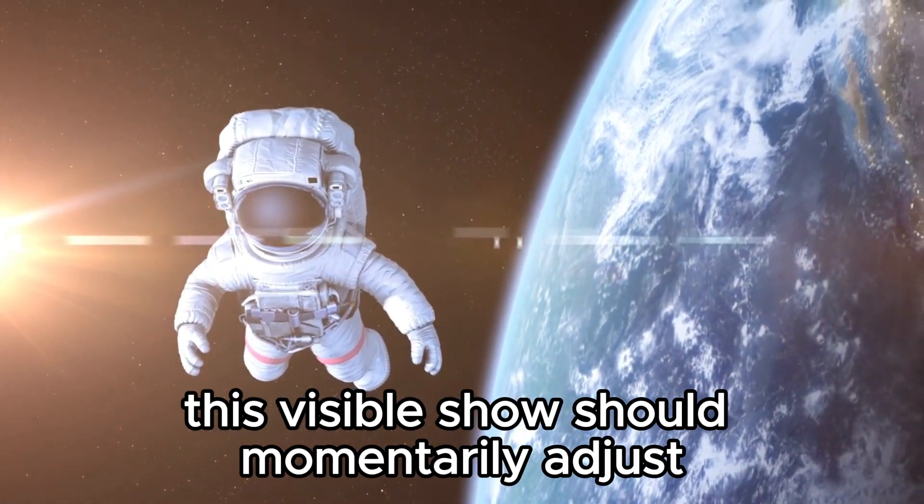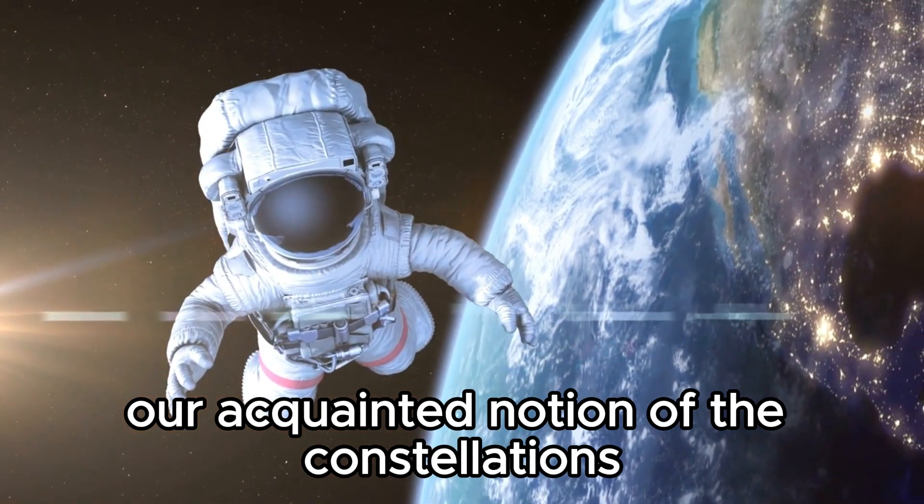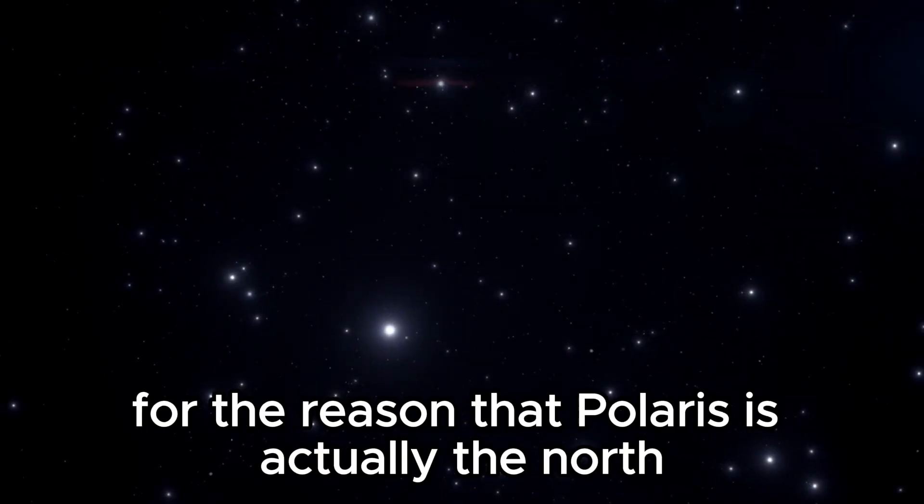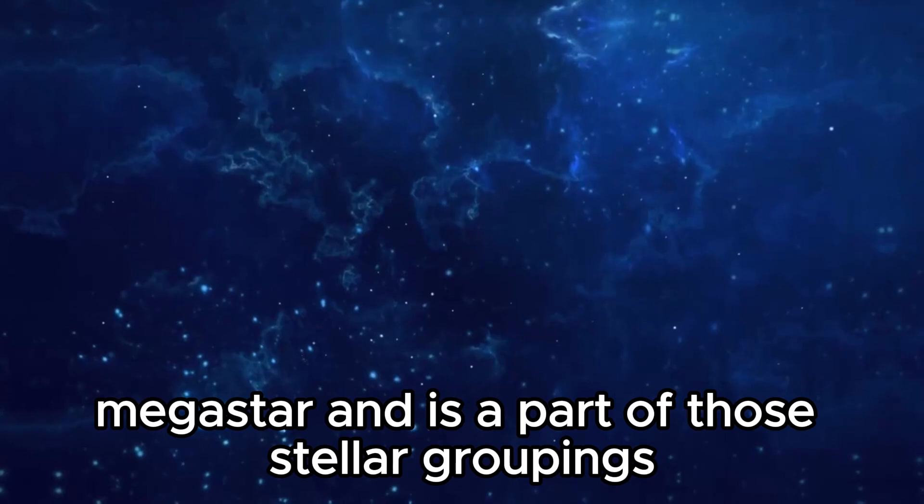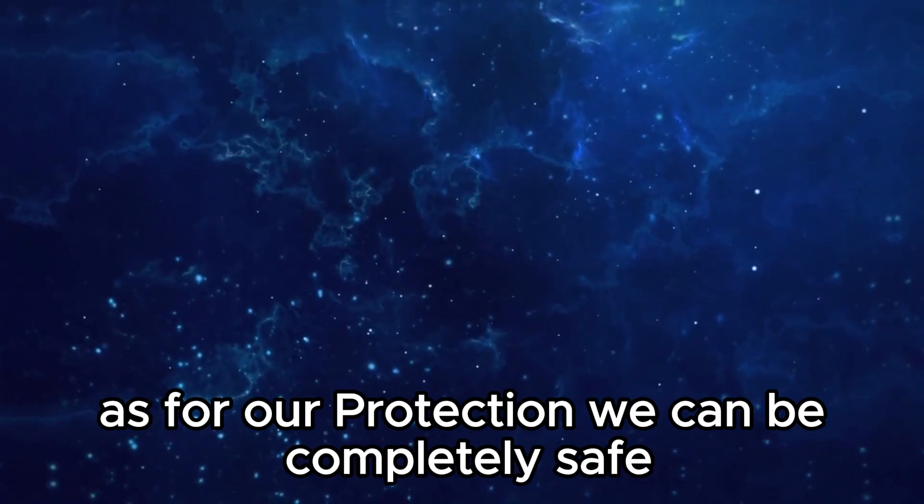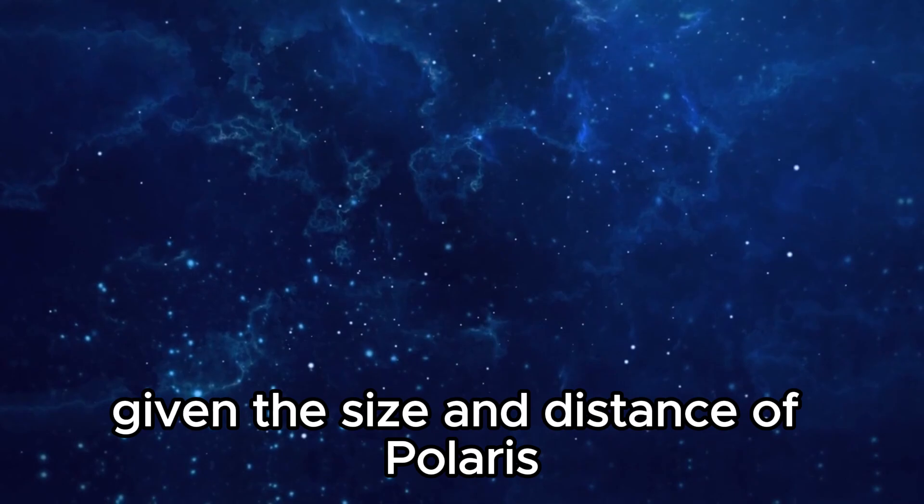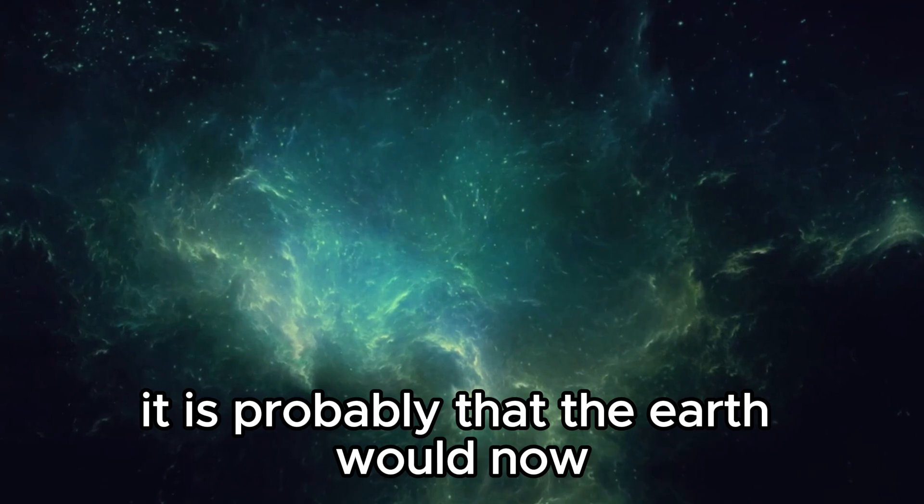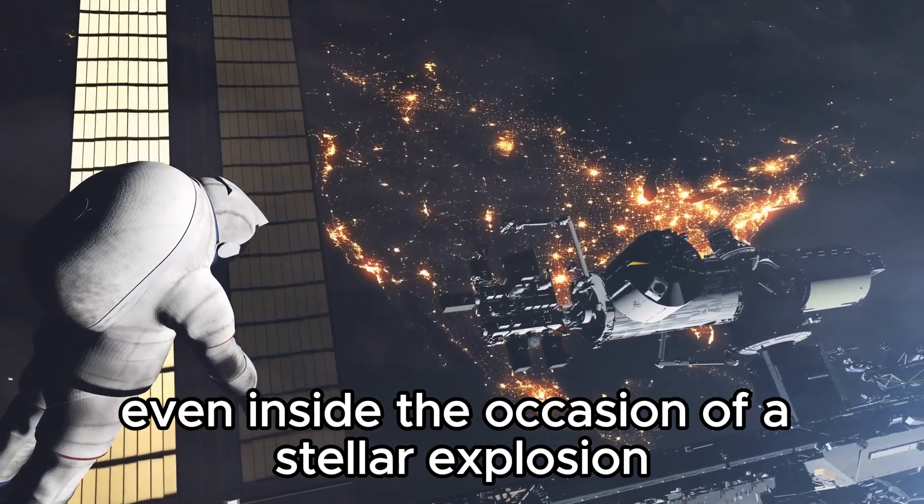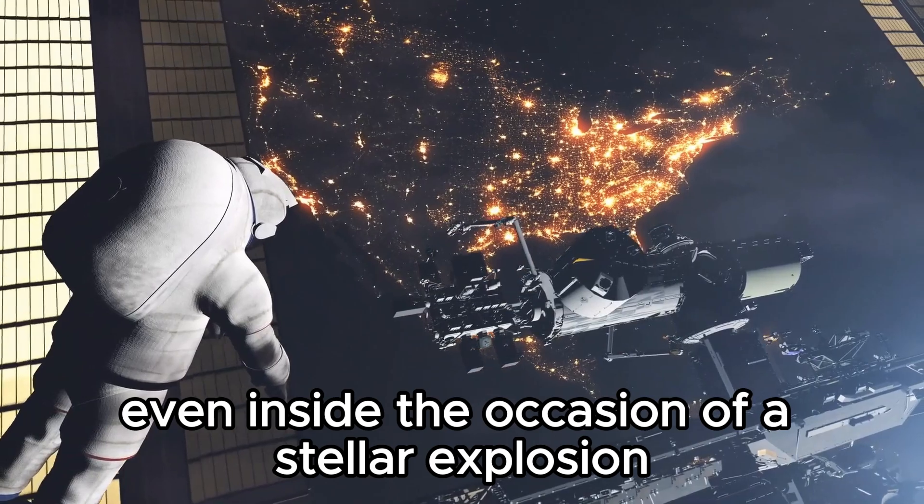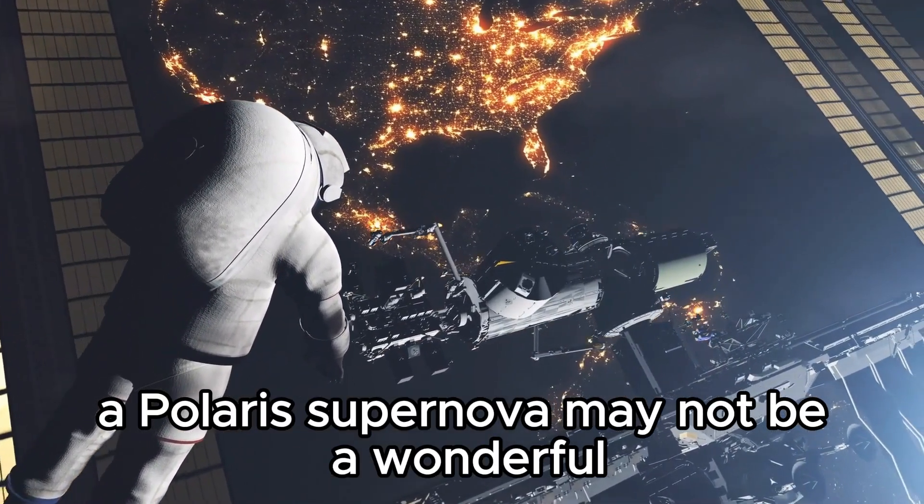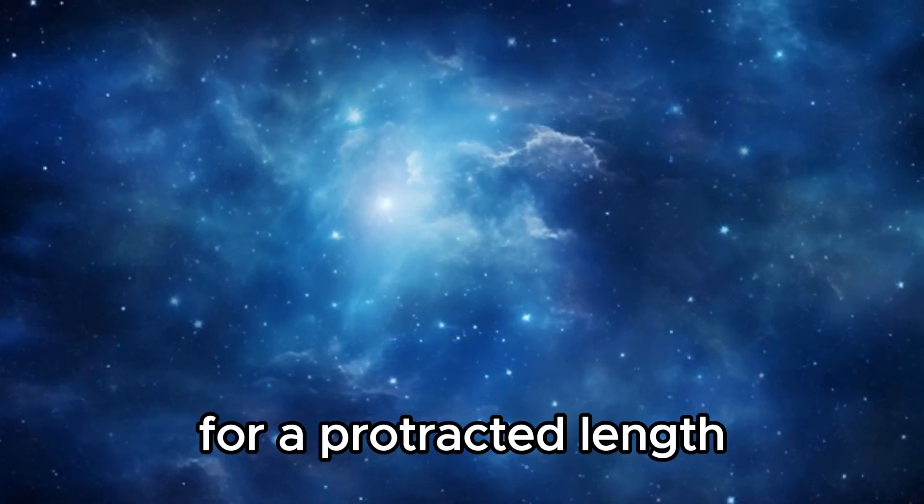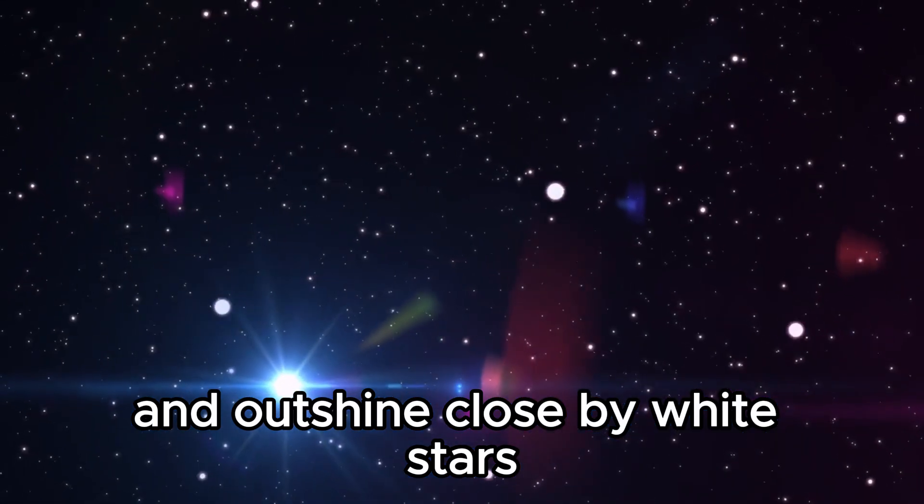This visual display could momentarily adjust our familiar perception of the constellations Ursa Major or Minor, for the reason that Polaris is actually the North Star and is part of those stellar groupings. As for our safety, we can be completely safe. Given the size and distance of Polaris, it is likely that the Earth would not be affected even in the event of a stellar explosion. Visually, although a Polaris supernova may not be as wonderful as Betelgeuse, it could be visible to the naked eye for a long period and outshine nearby bright stars.